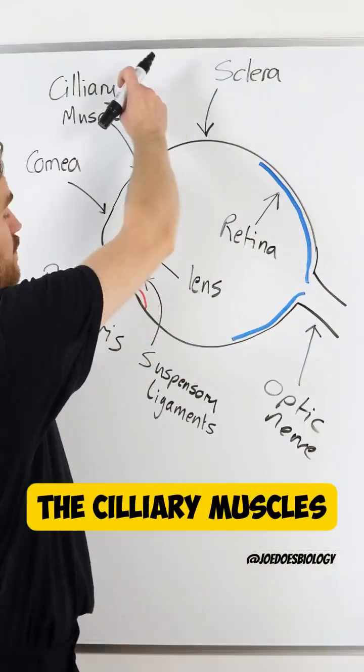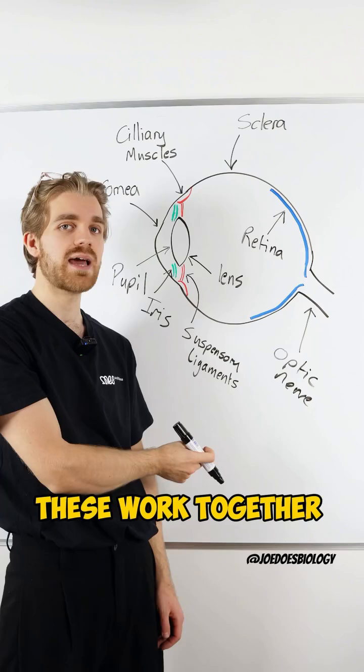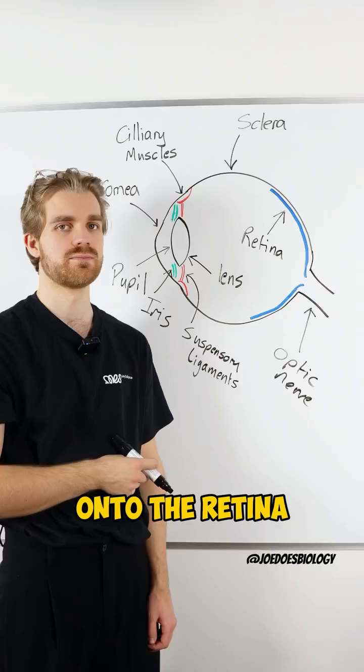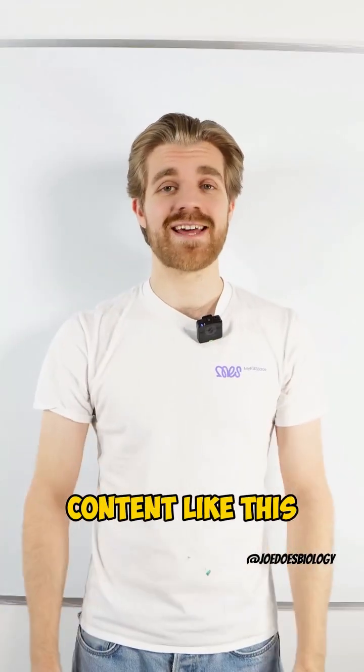Finally we have the ciliary muscles and the suspensory ligaments. These work together to pull on the lens and to change its thickness to help it focus the light onto the retina. Follow me for more biology content like this.